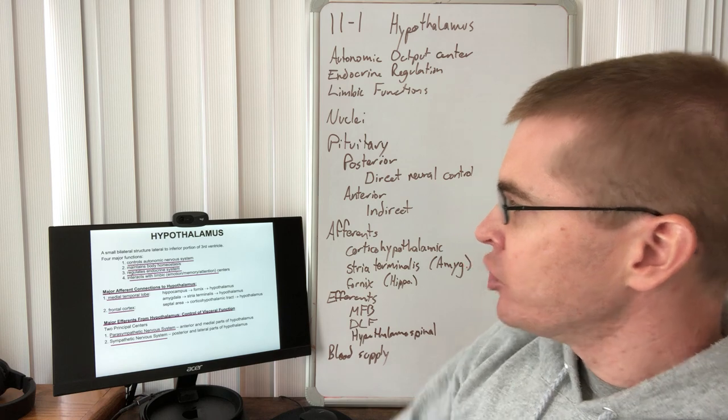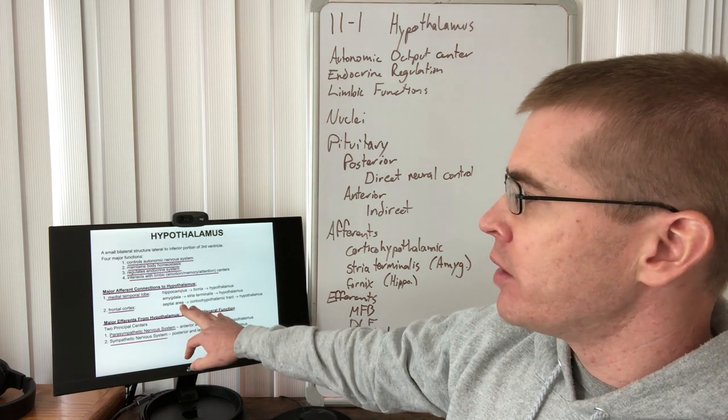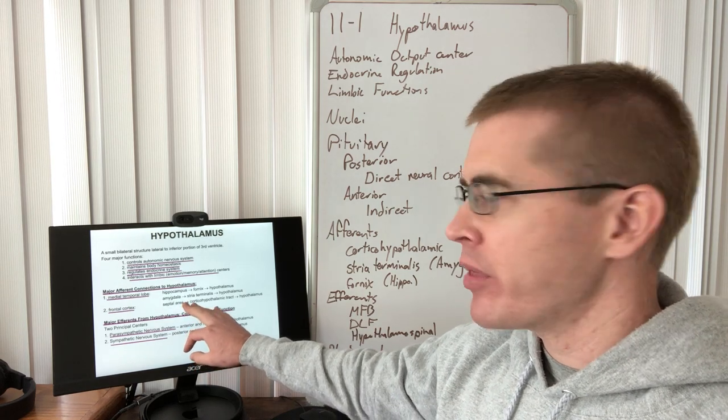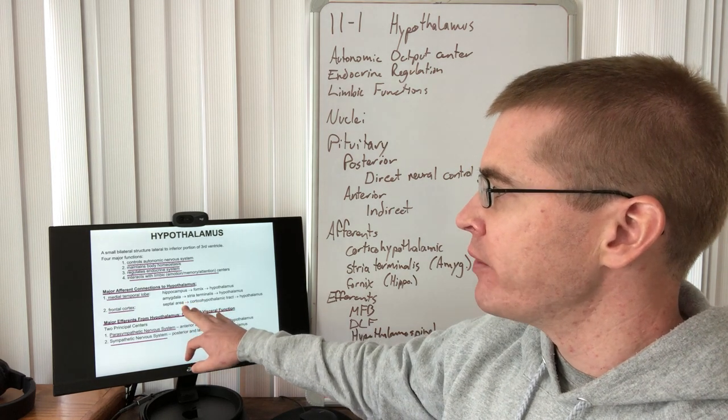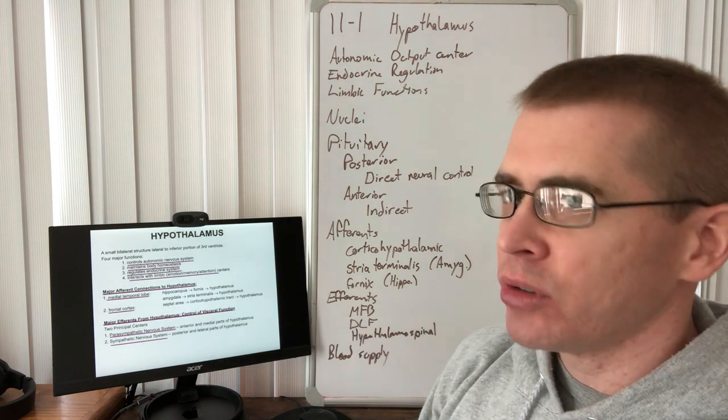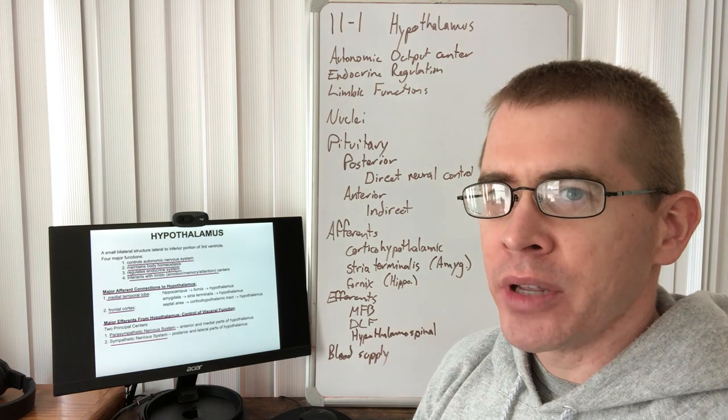We have a few major inputting regions to the hypothalamus. We'll call those afferents and that's the hippocampus, the amygdala and the septal area that we've already mentioned.